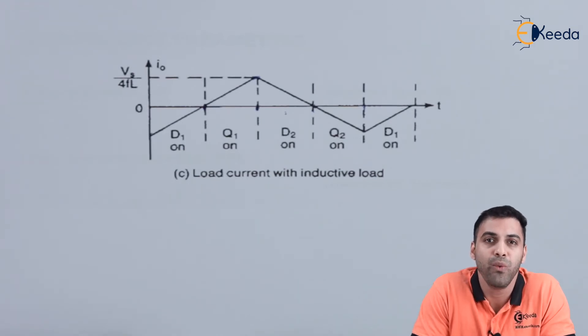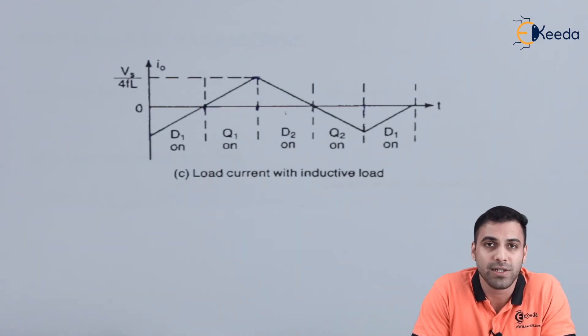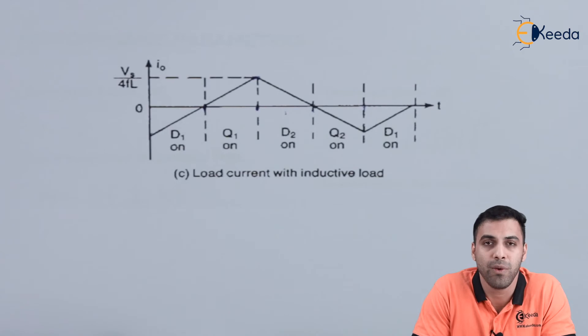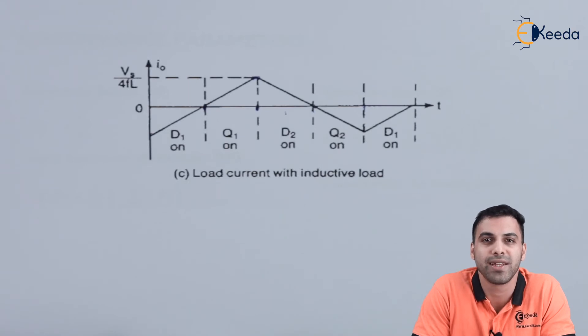To summarize: today we discussed how we can convert a DC value to an AC value using transistors, how we can connect an inductive load, and what happens when we do — we saw the waveform. We also saw what happens when we connect a resistive load and observed that waveform as well.